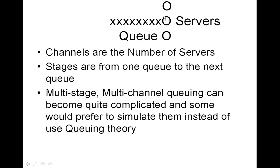For example, in a manufacturing process, you wait in one queue, you'd be served, and then there's another queue and another set of servers. These multi-stage, multi-channel queuing models can become quite complicated, and some people prefer to simulate them using Monte Carlo simulation instead of using queuing theory.